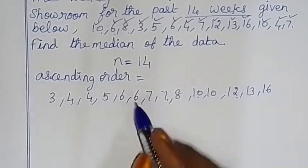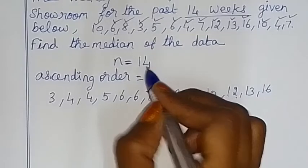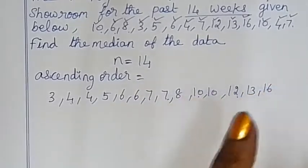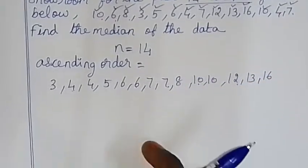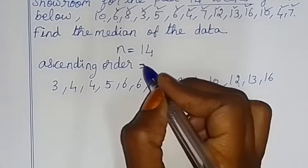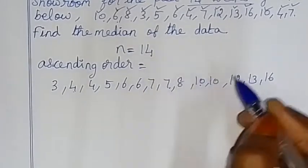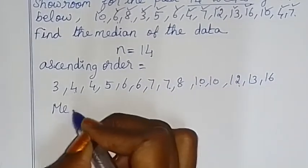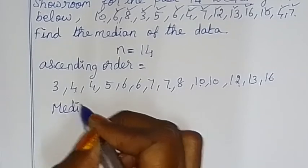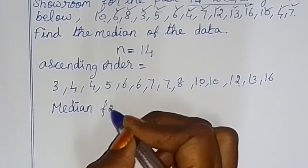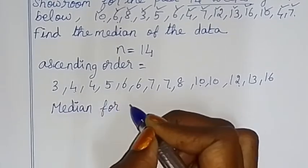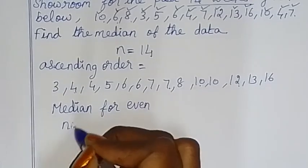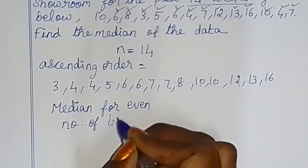We have 14 terms, which is an even number of terms. For even number of terms, we have two middle terms. We will use the formula for median of even number of terms.